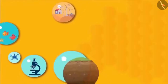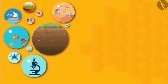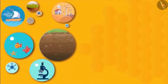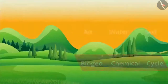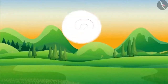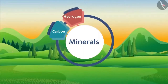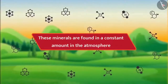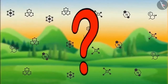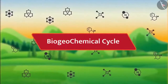Hello everyone, welcome back. Earlier, you learnt about air, water, and soil. In this video, let's understand about the biogeochemical cycles taking place in air, water, and soil. Friends, do you know what kind of minerals are found on the earth? Minerals such as carbon, hydrogen, oxygen, and nitrogen are found on the earth. These minerals are found in a constant amount in the atmosphere, maintained by the help of biogeochemical cycles.